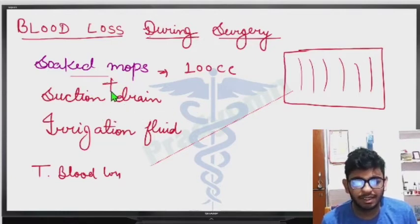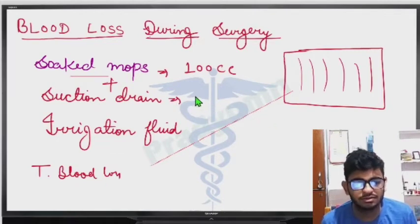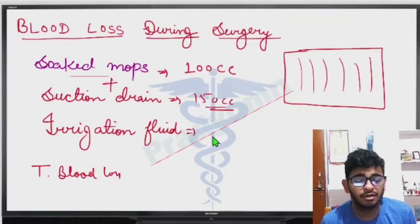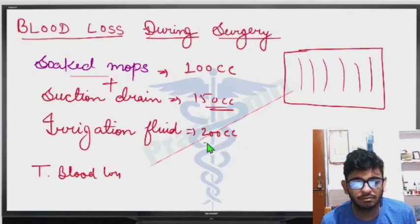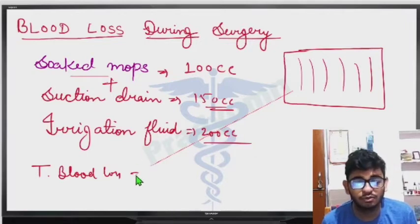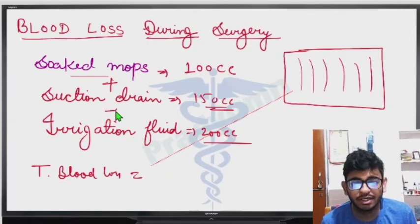Plus blood in the suction drain — suppose 150 cc. And irrigation fluid used — suppose 200 cc. Total blood loss equals soaked mops plus suction drain minus irrigation fluid: 300 plus 150 minus 200 equals 250 cc. This is just an example of how we calculate total blood loss.